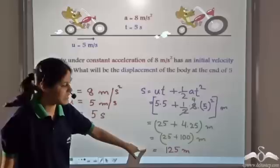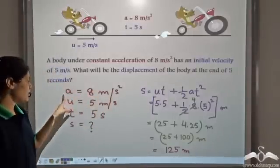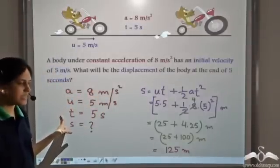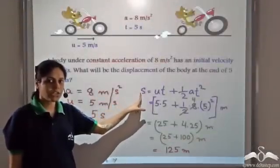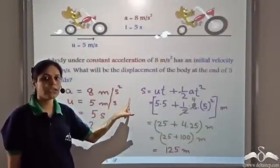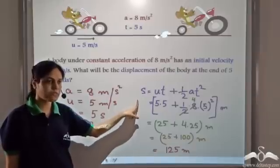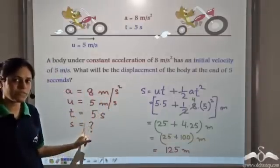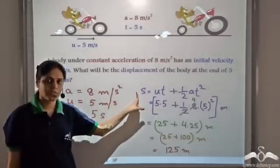So 125 meters is the displacement for this acceleration, initial velocity and time taken. This is the second equation of motion — it is the relation between initial velocity, time taken, acceleration and displacement. Given any three of these terms, we can find the fourth one using this equation.